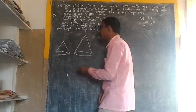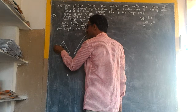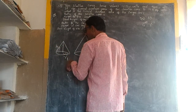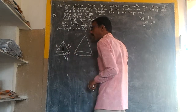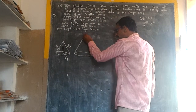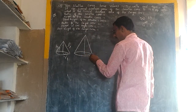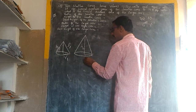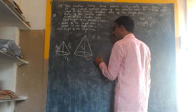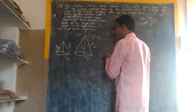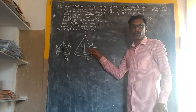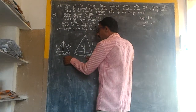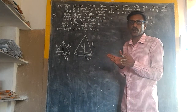Therefore, for the smaller cone we label the height as h1, the radius as r1, and the slant height as l1. For the larger cone, the height is h2, the radius is r2, and the slant height is l2. The corresponding sizes are in the same ratio.